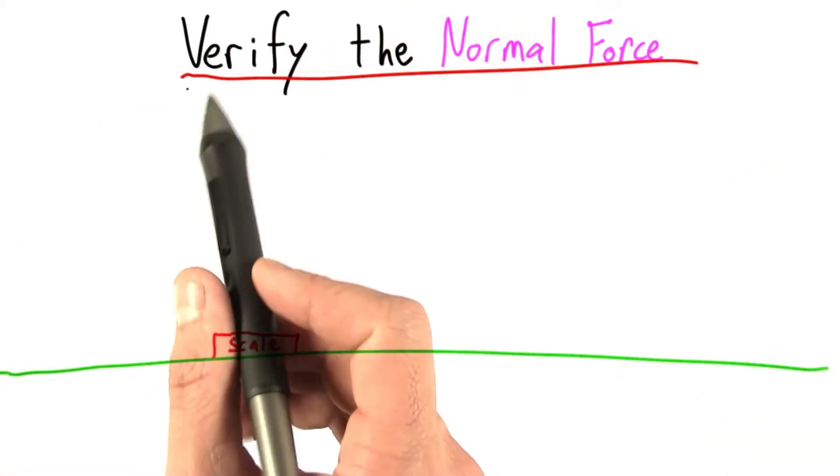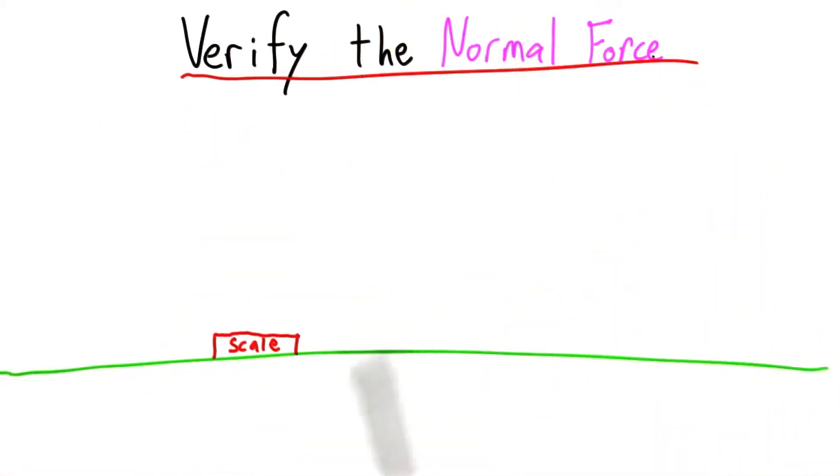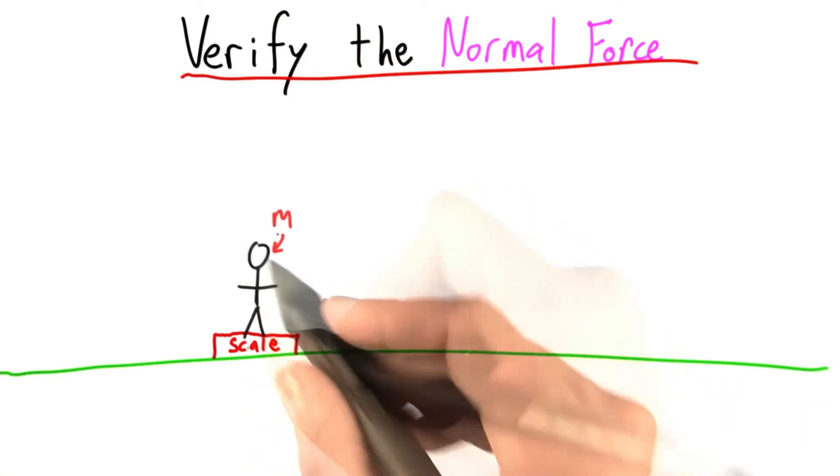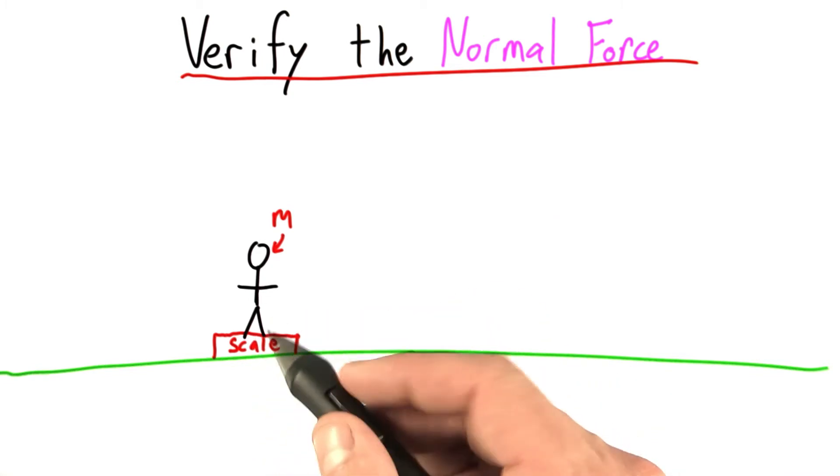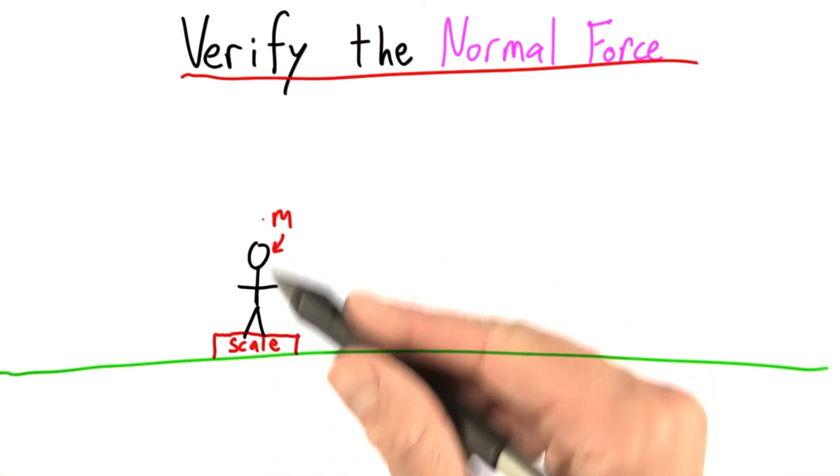In fact, we can verify the existence of the normal force with something as simple as a scale, like the one you might find in your bathroom. So here you are, some person with mass m standing on a scale. I don't like this picture because people are hard to draw.